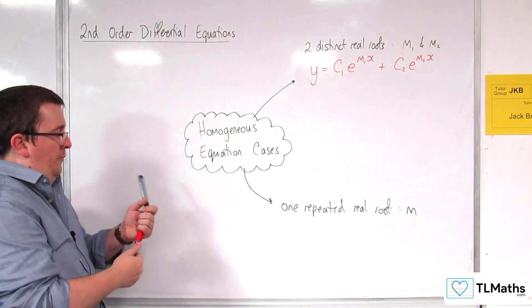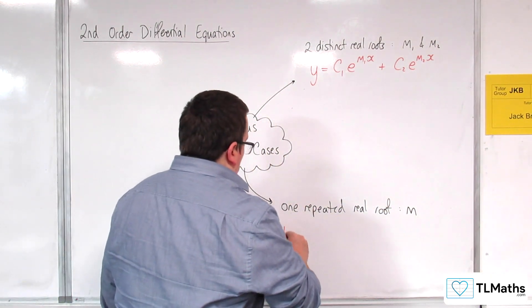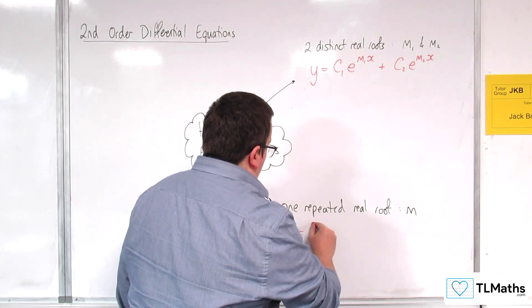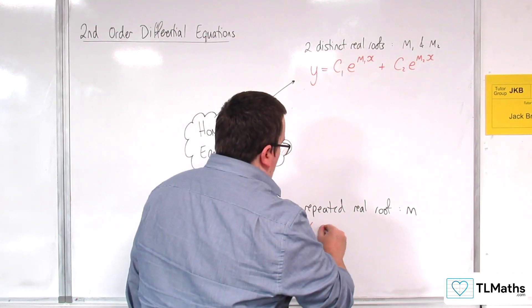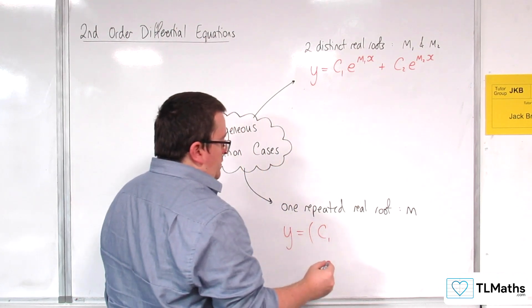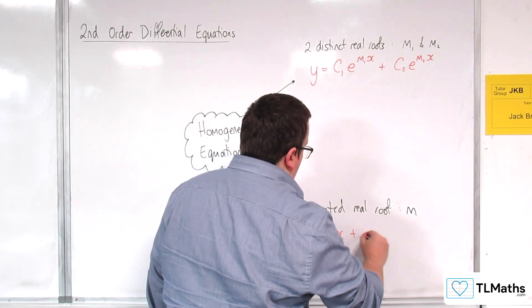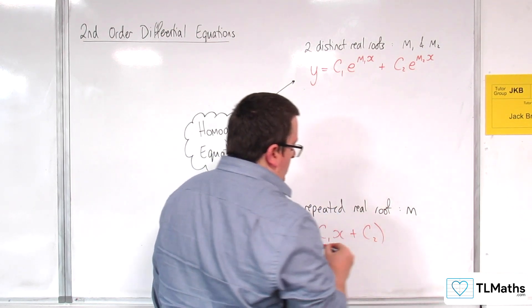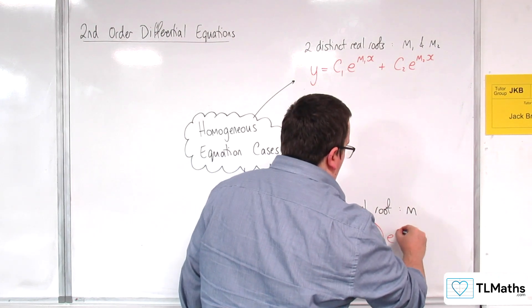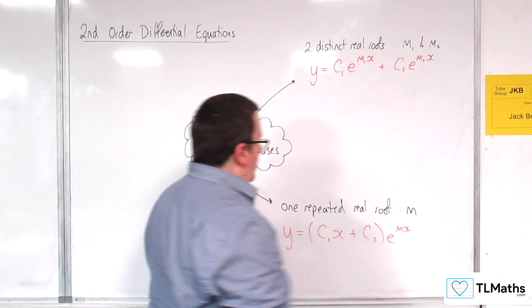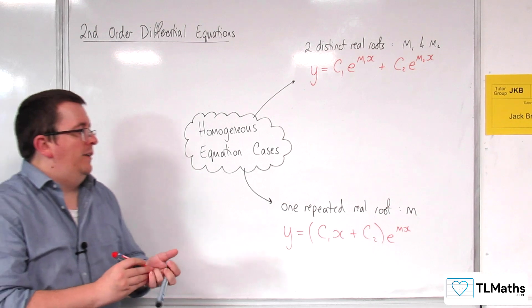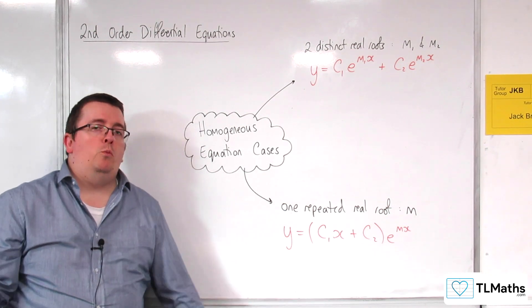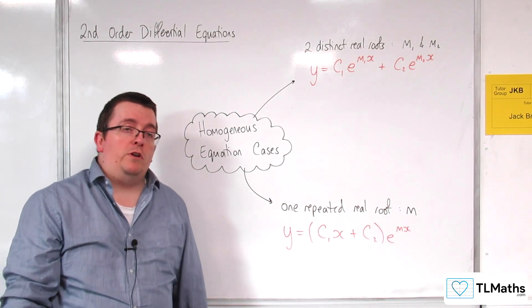Then the form would be y is equal to, open bracket, some constant c1 times x plus another constant c2, e to the power of m times x. And so that is the format we would need to use if we've got one repeated real root for the auxiliary equation.